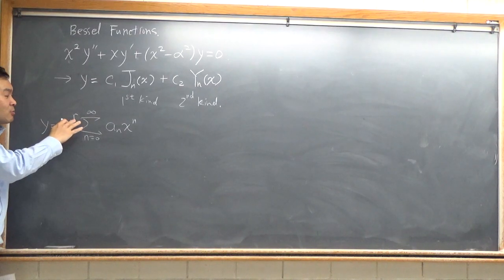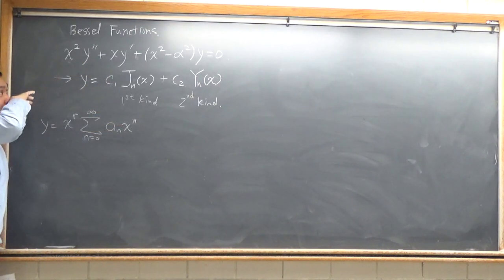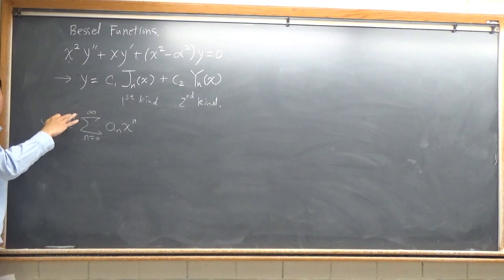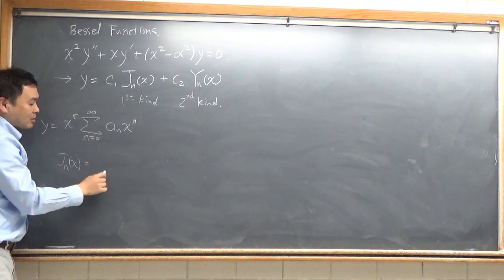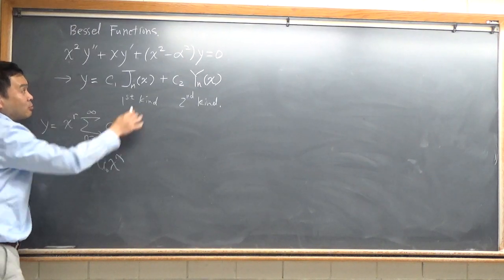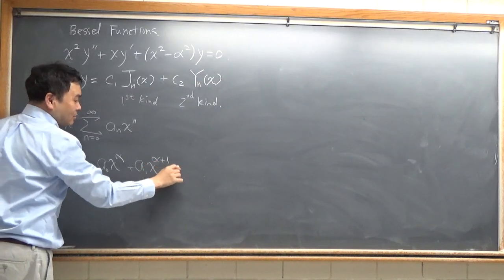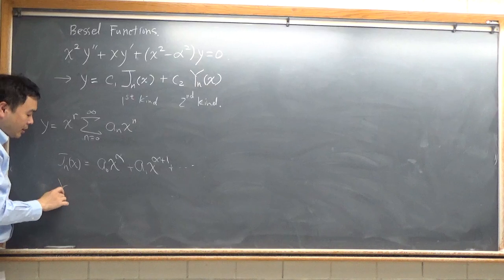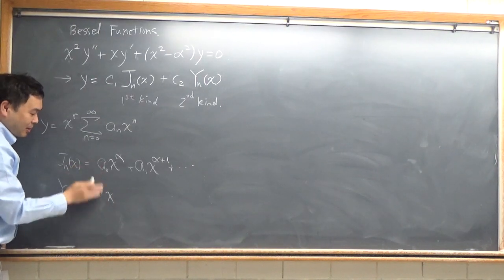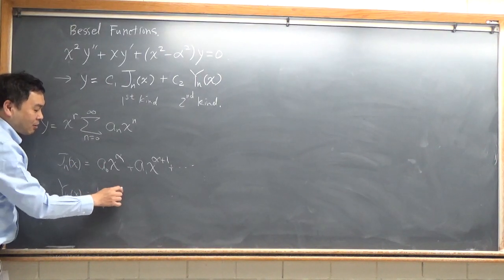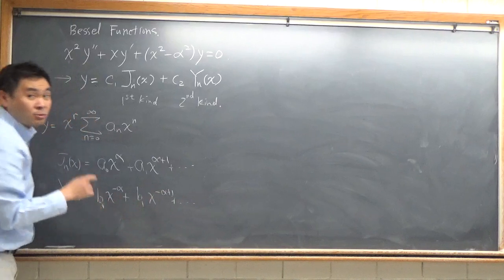So what happens is that J_alpha of x has its very first term starting from x to the alpha, plus a1 times x to the alpha plus one, and so on. Then Y_n has a value starting from b0 times x to the negative alpha, plus b1 times x to the negative alpha plus one, and so on.